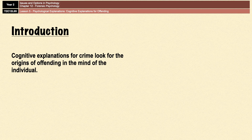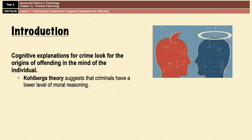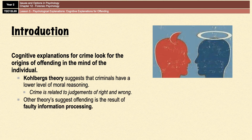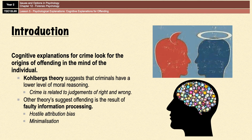To do that we're going to look at a couple of theories. The first is Kohlberg's theory of moral reasoning, which suggests that crime is related to judgments of right and wrong, and that criminals have a lower level of moral reasoning than non-criminals. The second group of theories focus on the impact of faulty information processing, and within that we're going to consider the role of a hostile attribution bias and of minimalization.